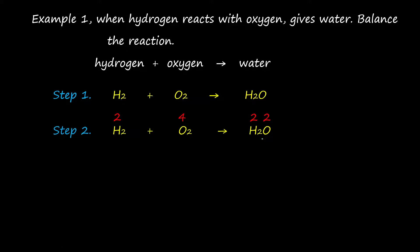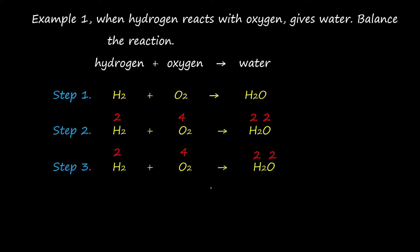The third step is to find the LCM of each total valence and place it above the arrow. Find the LCM of 4 and 2 — the LCM is 4. Then write this 4 above the arrow.